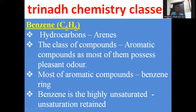Compounds containing carbon and hydrogen are called hydrocarbons. Hydrocarbons are classified into two types: one is open chain compounds, also called aliphatic compounds, and the second one is cyclic compounds, also called closed chain compounds.